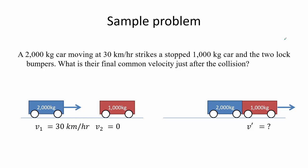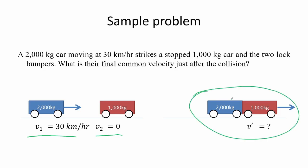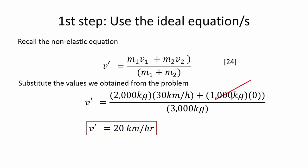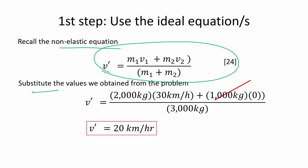Here is an example of inelastic collision: a 2000 kg car moving at 30 km/h strikes a stopped 1000 kg car and the two lock bumpers. For letter A, we find their final common velocity just after collision. Using the equation for final velocity in an inelastic collision and substituting the given values, we find both cars move at a speed of 20 km/h.